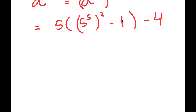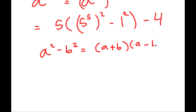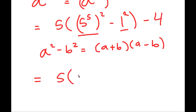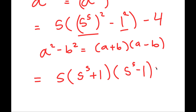I'm going to rewrite 1 as 1 squared so I can use the property a squared minus b squared equals a plus b times a minus b. We have a squared where a is 5 to the power of 5, minus b squared where b is 1. So it turns into 5 times (5 to the power of 5 plus 1) times (5 to the power of 5 minus 1), minus 4.